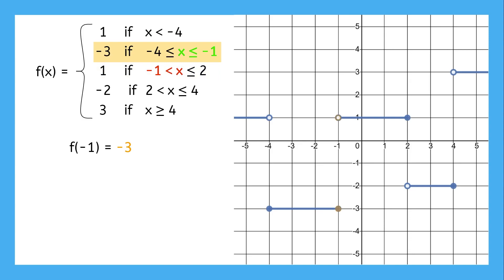If we use the graph, we can see that there are two points at negative 1, but an open point doesn't count, so the answer, just like before, would still be negative 3.